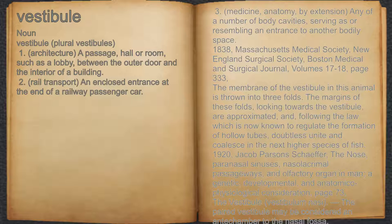1838, Massachusetts Medical Society, New England Surgical Society, Boston Medical and Surgical Journal, Vol. 17–18, p. 333: "The membrane of the vestibule in this animal is thrown into three folds. The margins of these folds, looking towards the vestibule, are approximated, and, following the law which is now known to regulate the formation of hollow tubes, doubtless unite and coalesce in the next higher species of fish."